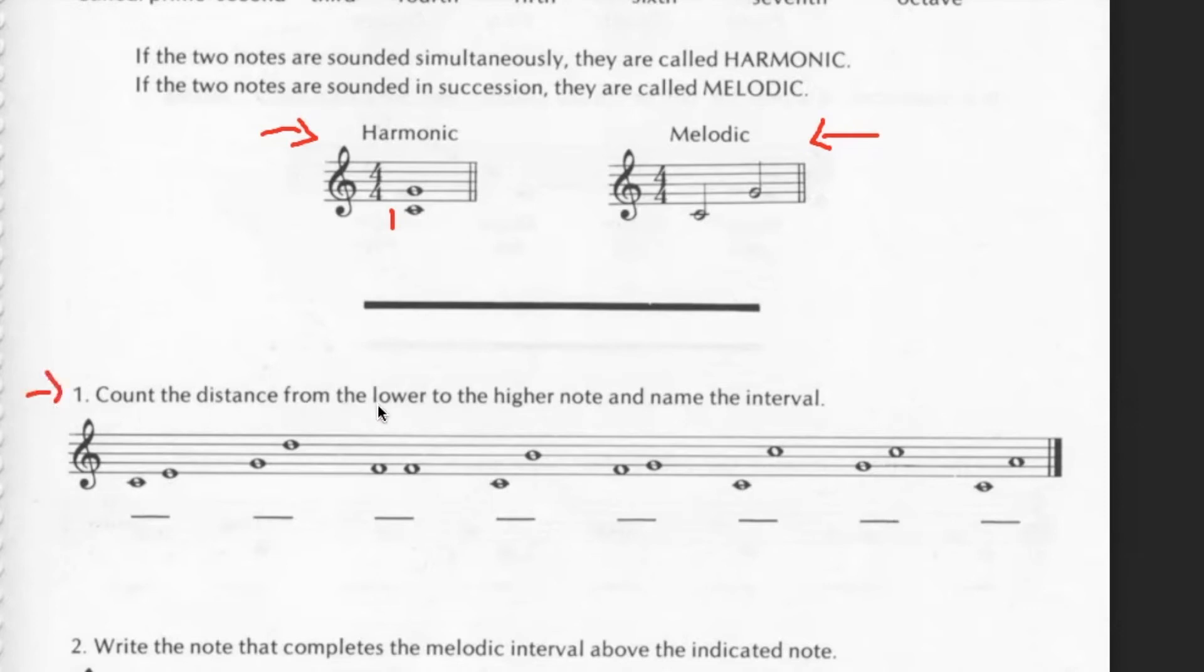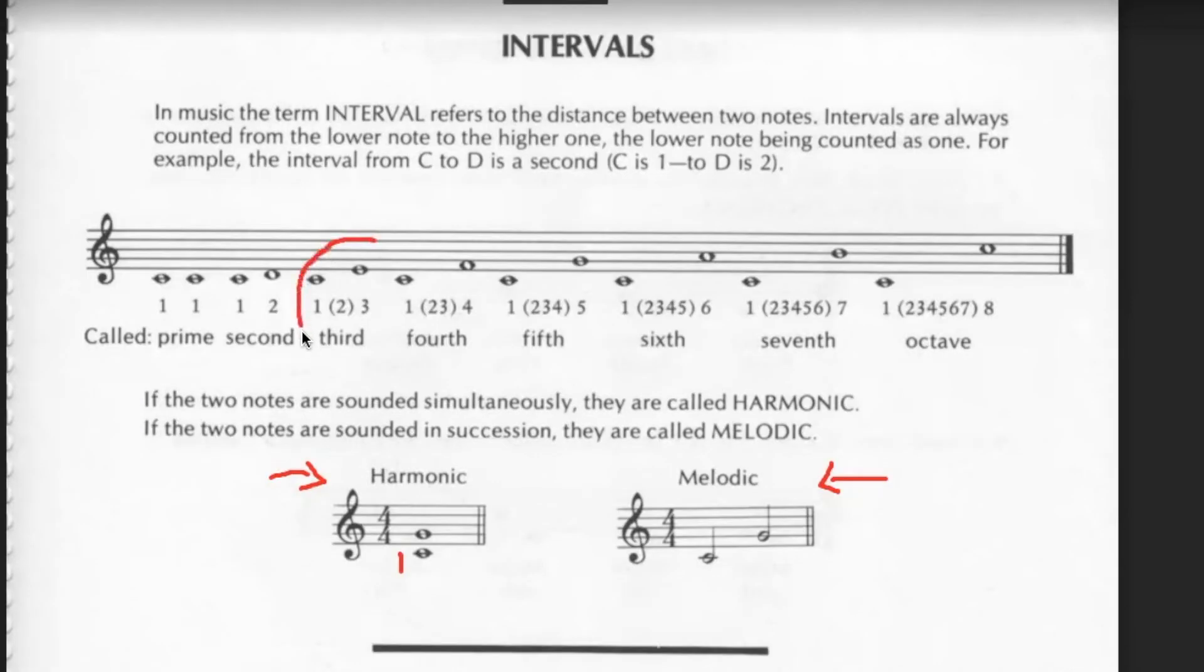So let's go to our first question. Count the distance from the lower to the higher note and name the interval. So let's count the intervals. So this note is one. And it's a line note. And then you can pretend that there would be a space note, which would make that two. And then we have the next note, which is on the first line, hopefully a third, right?